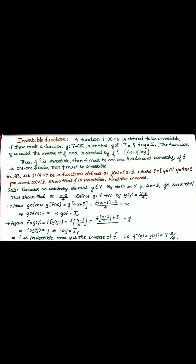Let us see one example. We will solve the problem using the composition function method. Example 23: Let f be a function from N to Y defined as f of x equals 4x plus 3, where the set Y equals the set of all natural numbers such that y equals 4x plus 3 for some x belonging to the set of all natural numbers. Show that f is invertible and find the inverse.